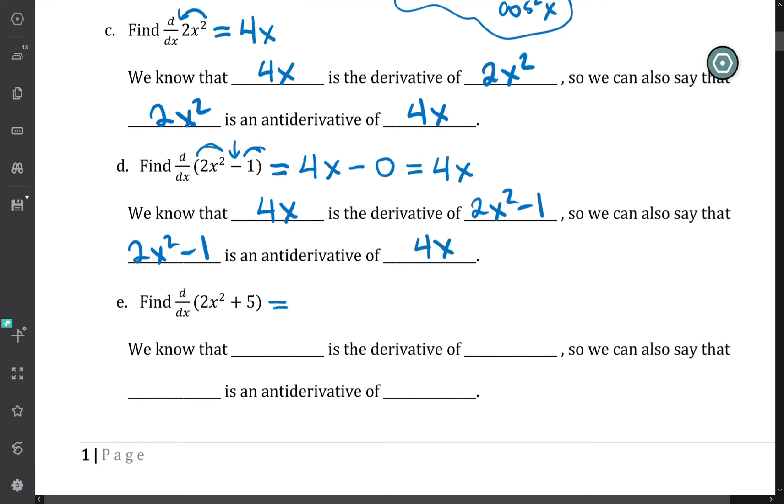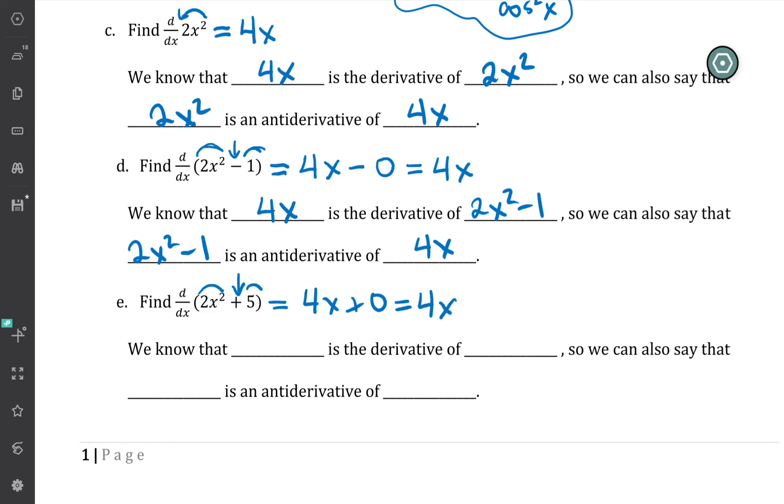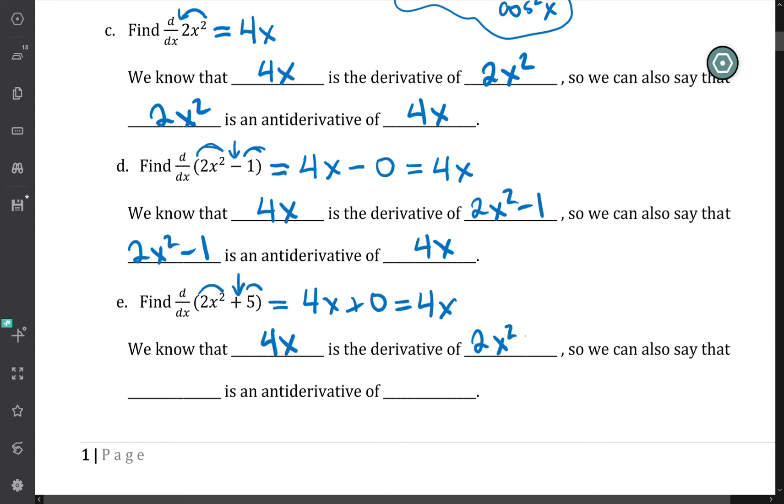And one more to make sure you're really getting my point. Same thing here, big operation is plus, so we get to look at the two separately. The derivative of 2x² is 4x, the derivative of 5 is 0. You do not have to write the plus 0 out for me, I'm just trying to make sure I show all the little pieces, since this might give you some reminders. So we know that 4x is the derivative of 2x² + 5, which means that we can also say that 2x² + 5 is an antiderivative of 4x.